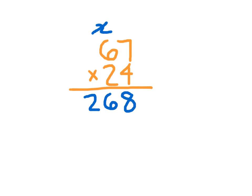Now we need to figure out 67 times 20, because that 2 is worth 20. We place a 0, and then we work with the 2. Starting with 2 times the 1s place first — 2 times 7 which is 14. Place the 4 and regroup the 1. Then 2 times 6 which is 12, plus 1 which is 13.